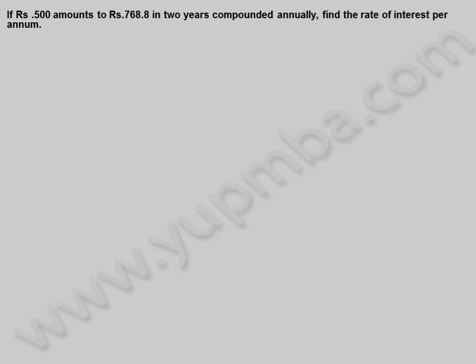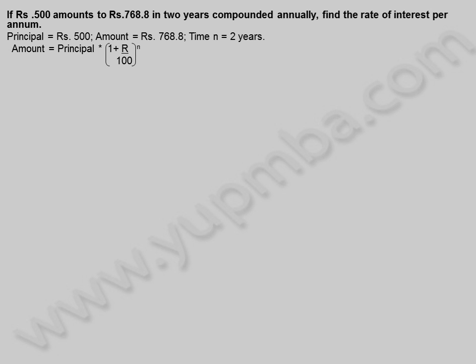If 500 rupees amounts to 768.8 rupees in 2 years compounded annually, find the rate of interest per annum. Principal is equal to 500 rupees, amount is equal to 768.8 rupees, time n is equal to 2 years. Amount is equal to principal into 1 plus rate by 100, whole power n.